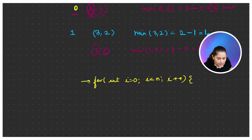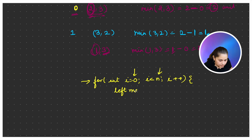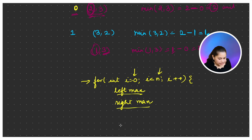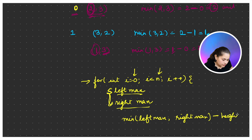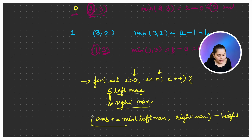For every bar from index 0 to n, what we do is: calculate the left maximum, calculate the right maximum, then calculate the minimum of left max and right max, subtract the height of that particular bar, and add it to our answer.